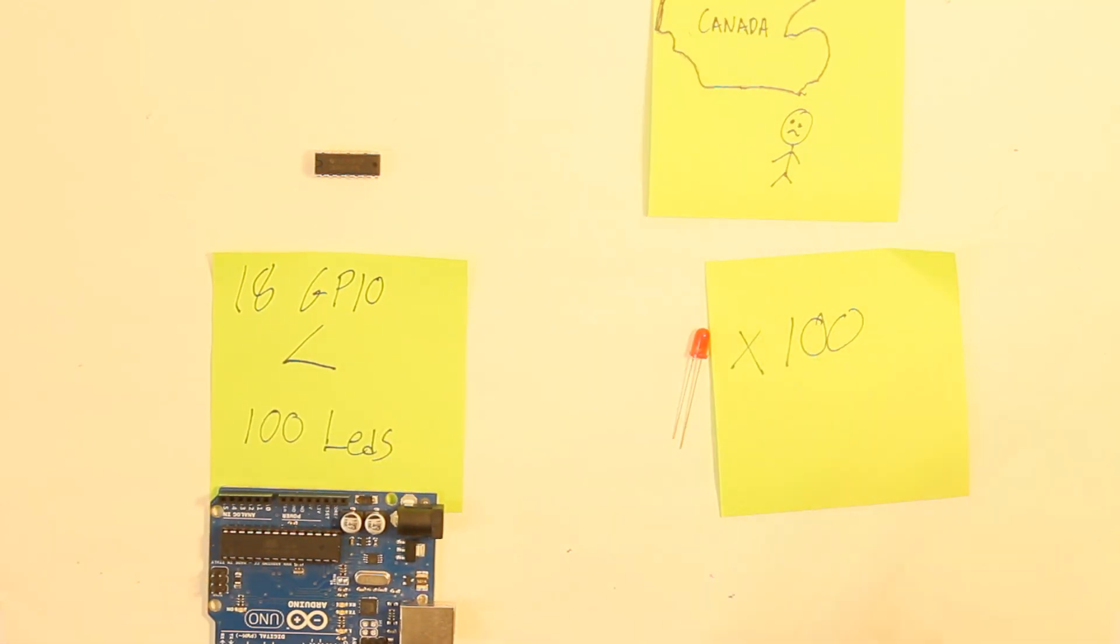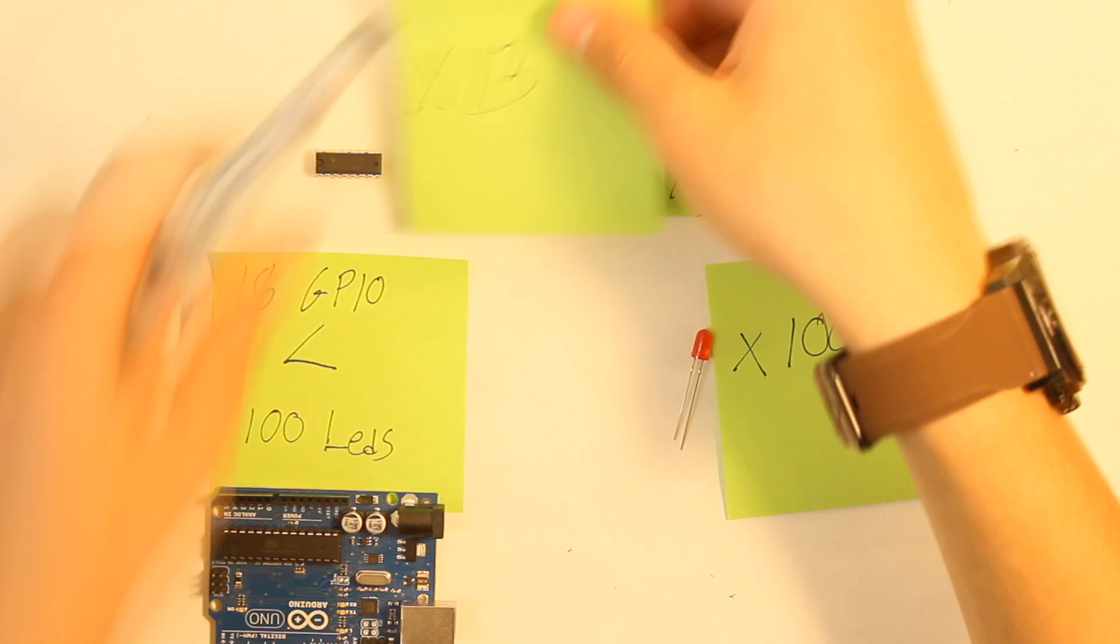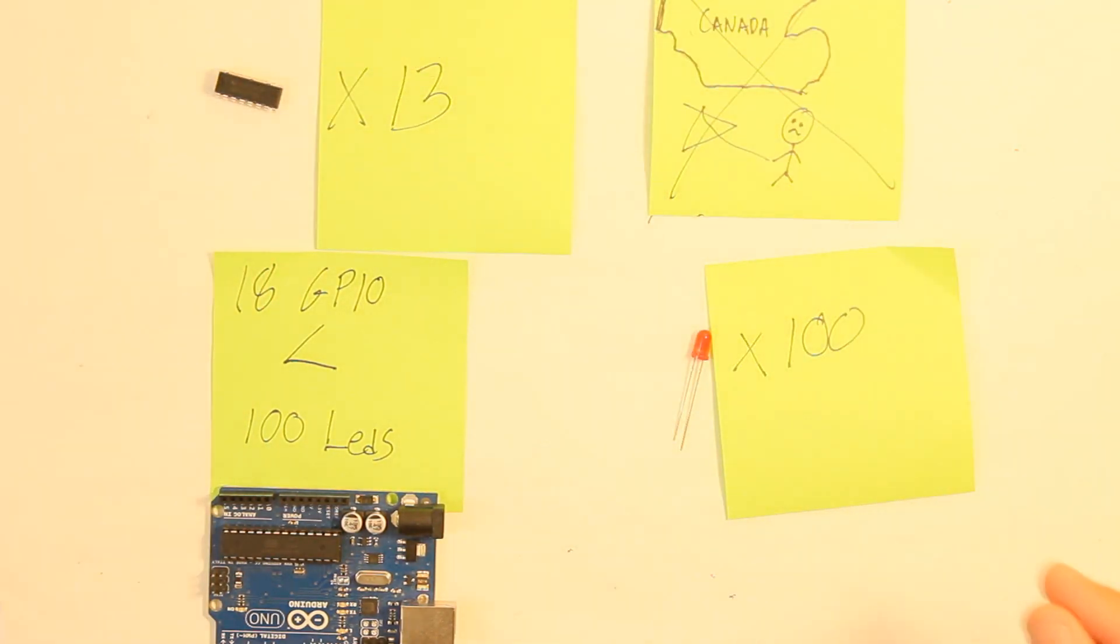Change your name and move to Northern Canada? No, because you have 13 shift registers. With these shift registers, you can control all of these LEDs with only three pins on your Arduino.